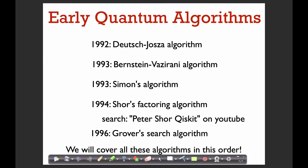Shor's factoring algorithm was kind of directly developed from Simon's algorithm. If you look on the Qiskit YouTube channel — search for Peter Shor or Qiskit — you should find a video of Peter Shor discussing how he came up with his discrete logarithm and factoring algorithms. He talks about how he reviewed Simon's algorithm for a conference and pretty immediately had the idea for his discrete logarithm algorithm, and then just a few weeks later came up with his factoring algorithm.